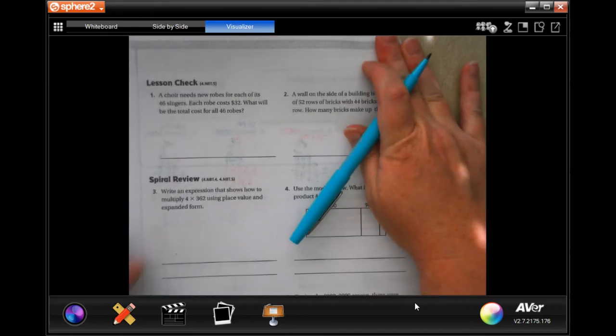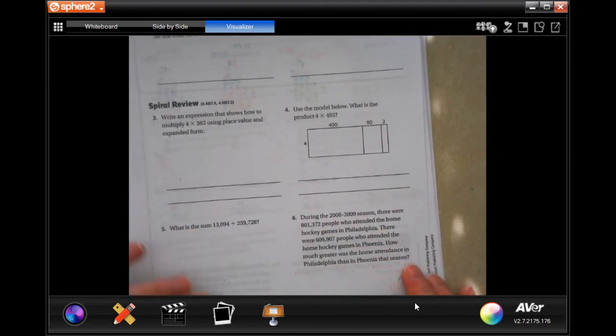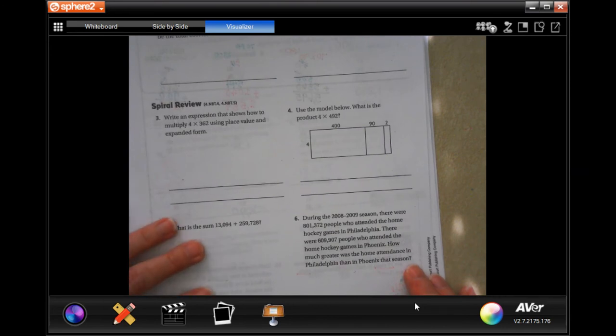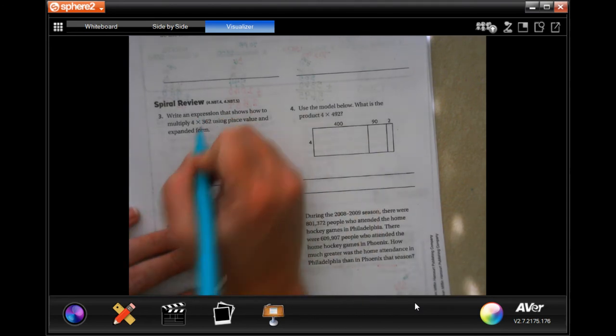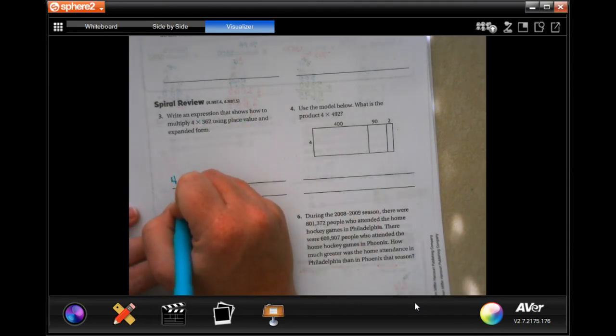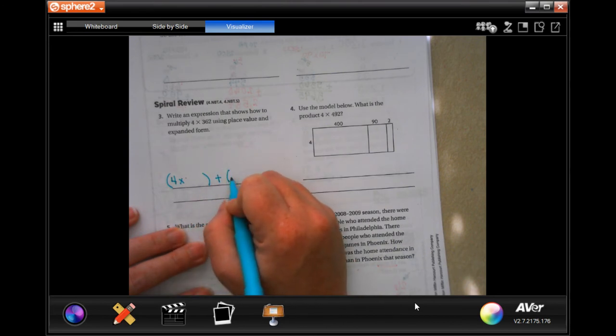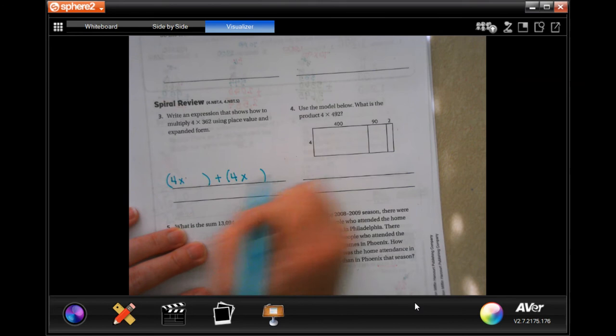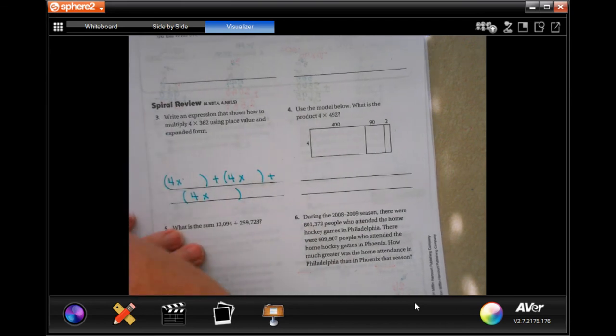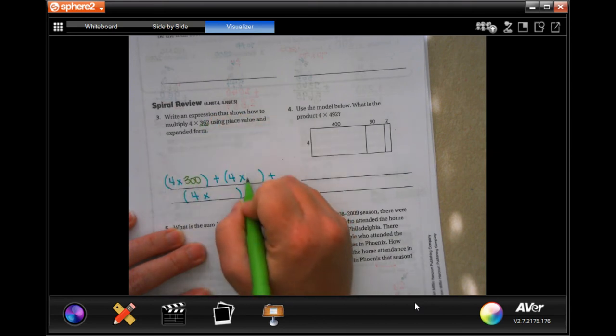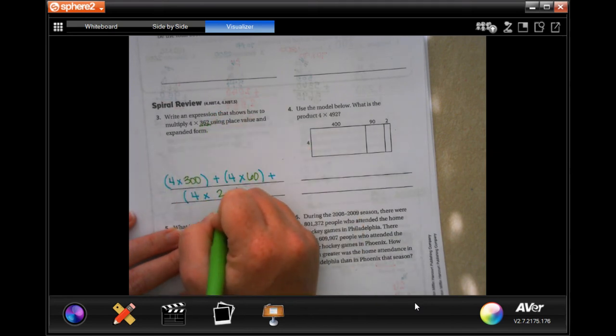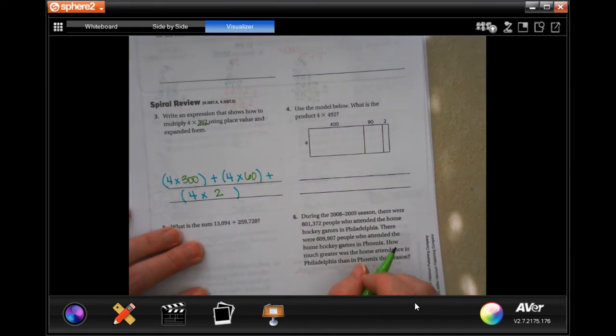So, we're going to go on to the back. You are going to take care of that lesson check. We're going to go down to spiral review. Write an expression that shows how to multiply four times 362 using place value and expanded form. So, all we're going to do is for each one of these spaces, we're going to create a four times and we're going to put it in parentheses and we're going to add in between. Now, expanded form means that's 300, that's 60, and that's two. Done. That's our expression.